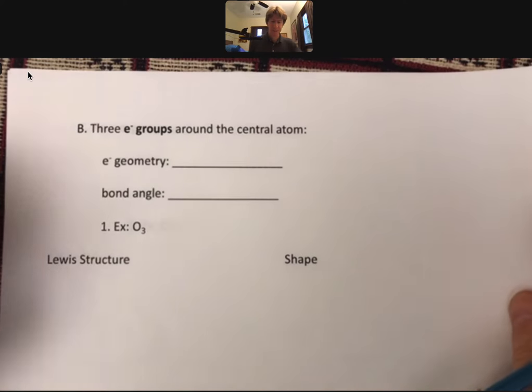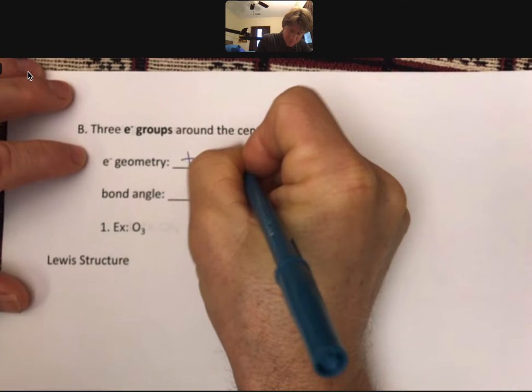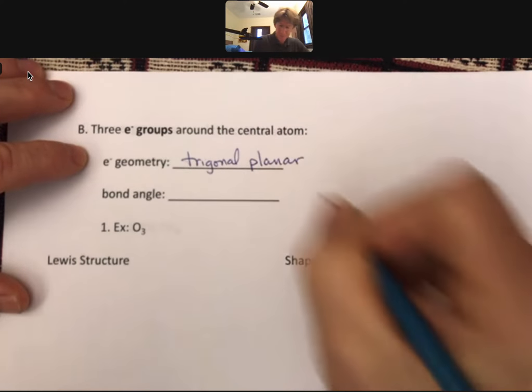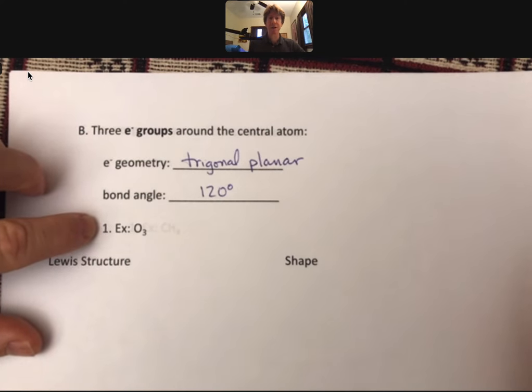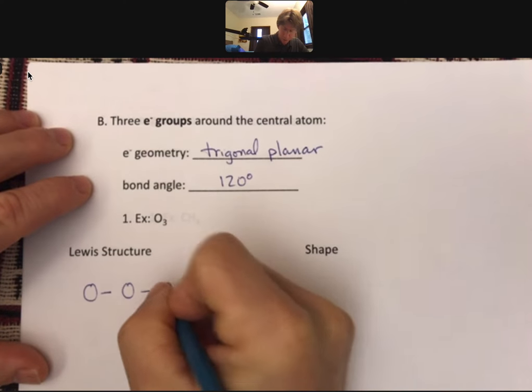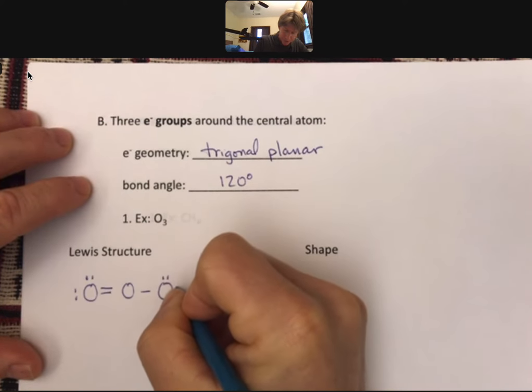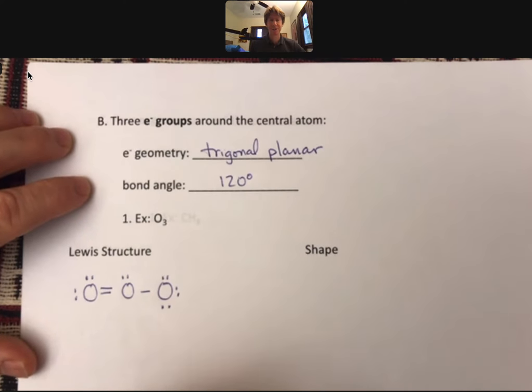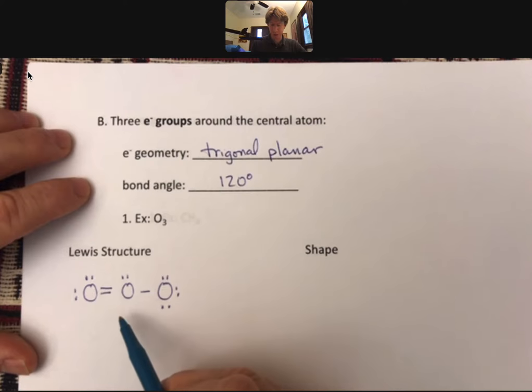Now let's go on to three electron groups. Three electron groups on the central atom, the electron geometry is trigonal planar, and the bond angle is 120 degrees. A good example of this is going to be ozone, O3. Its Lewis structure would be O-O-O, and it will turn out that there will be a double bond on one side, a single bond on the other side, and a pair of electrons on the oxygen. A single bond is one electron group, a pair of electrons is one electron group, and a double bond is a third electron group.